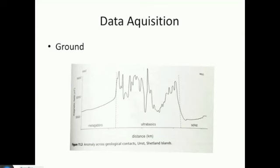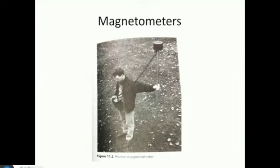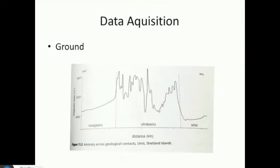Looking at a typical magnetic profile over magnetic rocks, you can see gabbro with very small values. Schist also has very low susceptibilities because there's not much iron. Ultra-basic rocks and different intrusions show higher values. This is what a typical magnetic profile looks like over magnetic rocks.